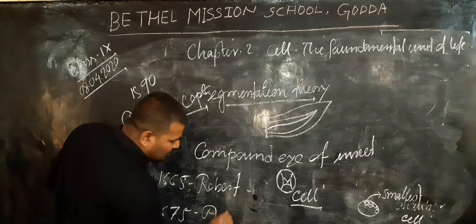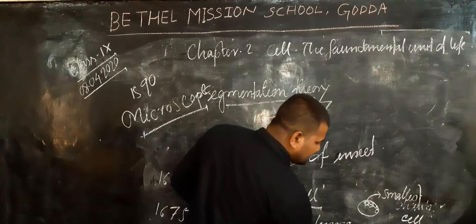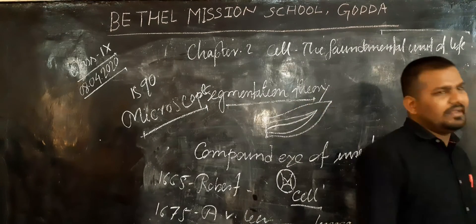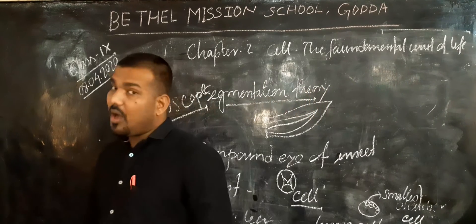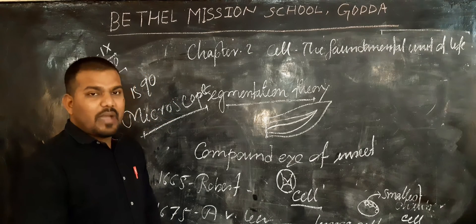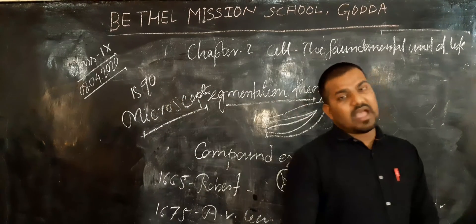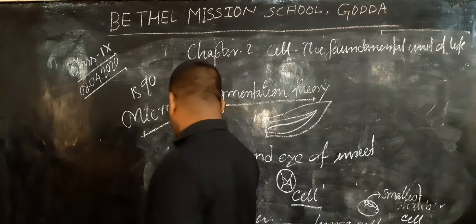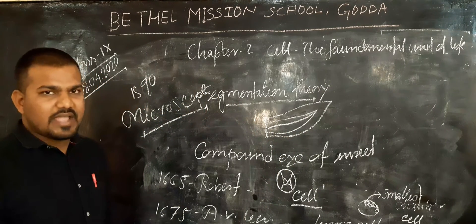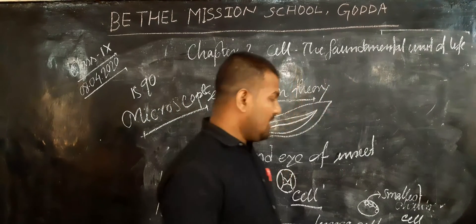In the year 1675, Antonie van Leeuwenhoek discovered the living cell. Leeuwenhoek was a Dutch microbiologist. He stored some rainwater and observed it drop by drop using his microscope, and found that some elements were moving from one portion to another. By this way, he discovered the living cell. He was also the first scientist to observe the sperm cell of cattle and the blood cell of human beings.